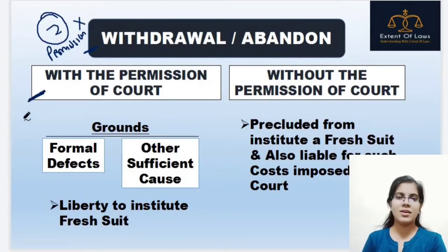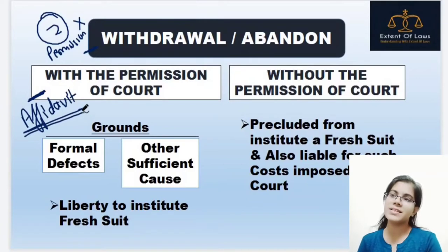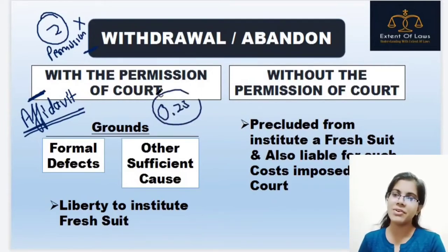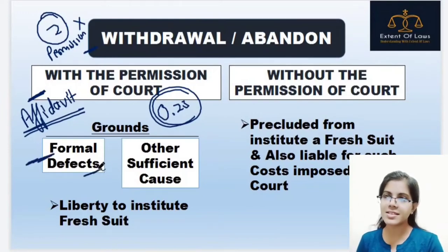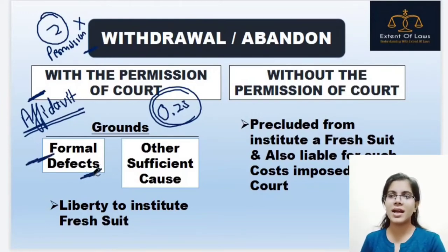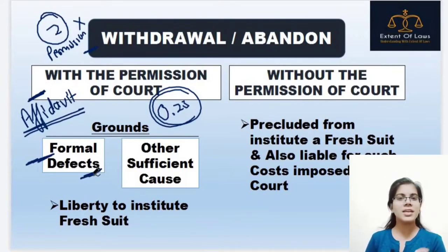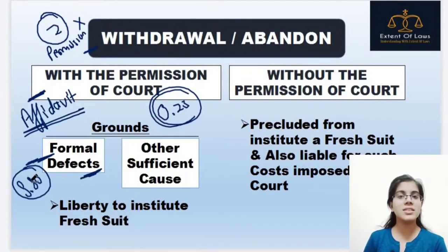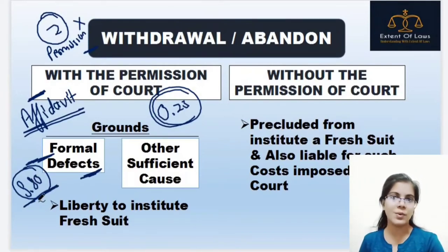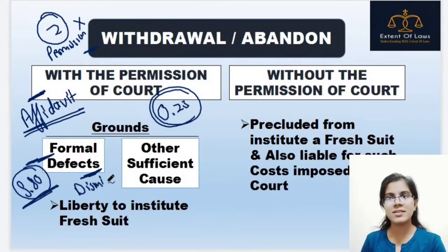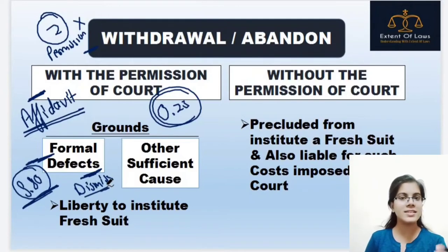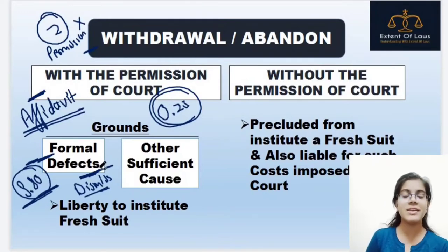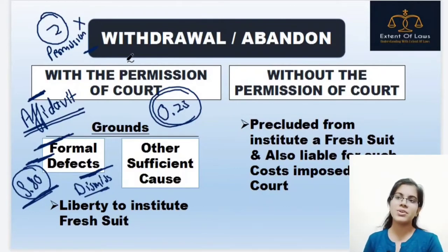In Order 23, there are two grounds for withdrawal. The first is formal defects — meaning procedural defects. For example, under Section 80, if you have not sent notice to the government, then obviously your case is dismissed except in exceptional cases. If there is any such procedural defect due to which your case is affected, then the plaintiff can withdraw with the court's permission.